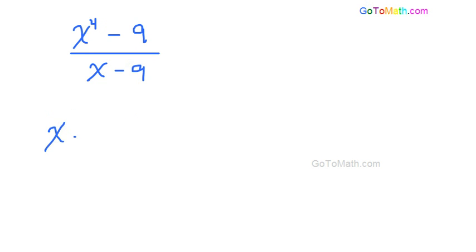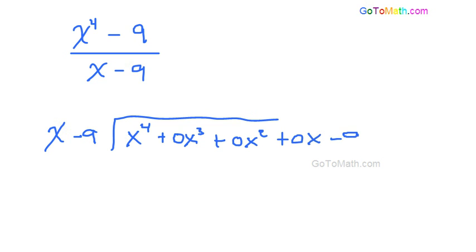Well, let's find out. So x minus 9, x to the 4th. Now I'm going to put a plus 0x cubed plus 0x squared plus 0x and then minus 9.